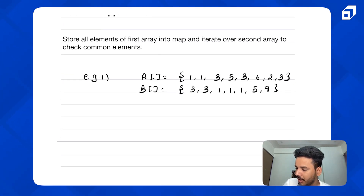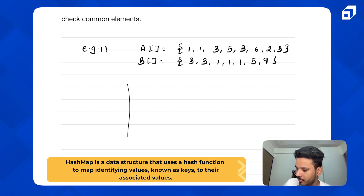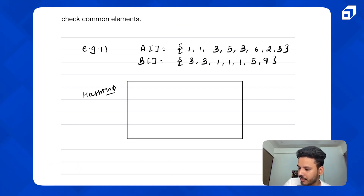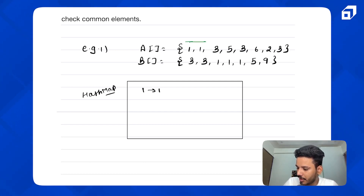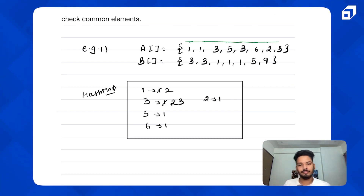Let's walk through with an example. We create a HashMap and store all elements of array A with their frequencies. First element is one — store one with frequency one. Another one — update frequency to two. Got a three — add with frequency one. Got a five — store with frequency one. Another three — update frequency to two. Then six with frequency one, two with frequency one, and another three — update three's frequency to three.